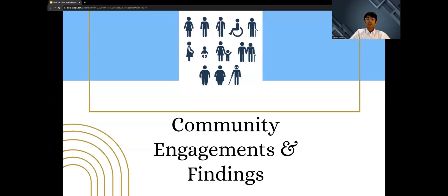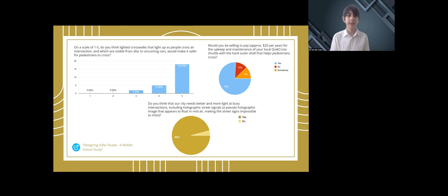Let's talk about our community's response to our ideas. We conducted a survey in Fremont targeting pedestrians and drivers of the various ages and ethnicities, and asked them how safe they felt with our solutions. Respondents agreed with implementing lighted crosswalks, kinetic energy tiles, along with the shuttle at dangerous intersections.